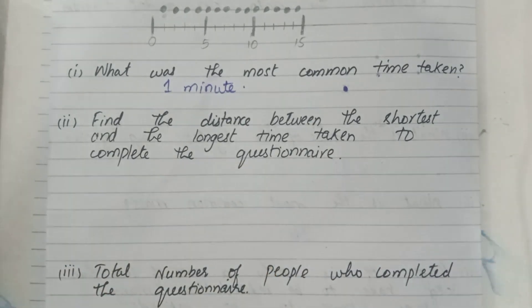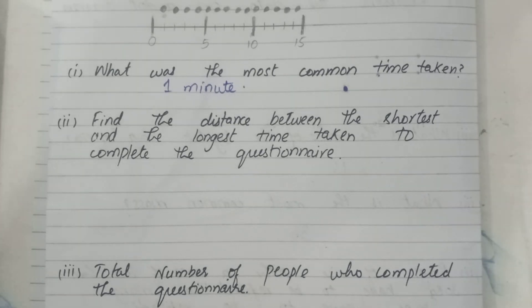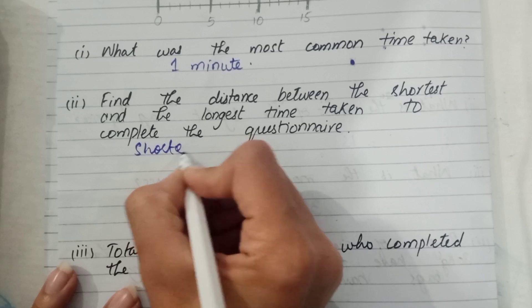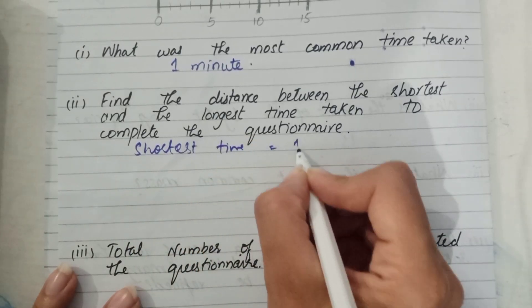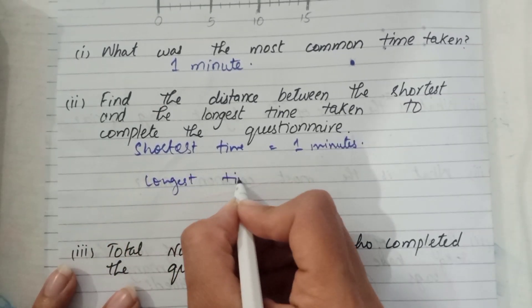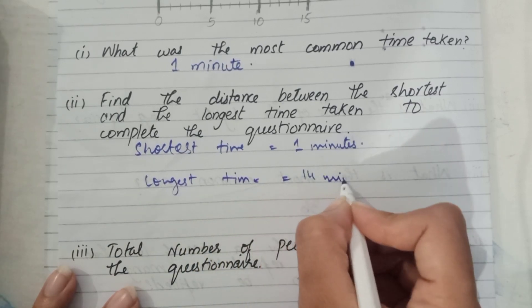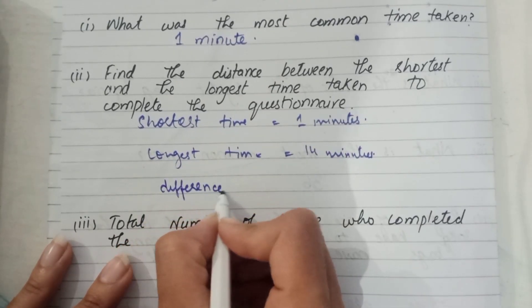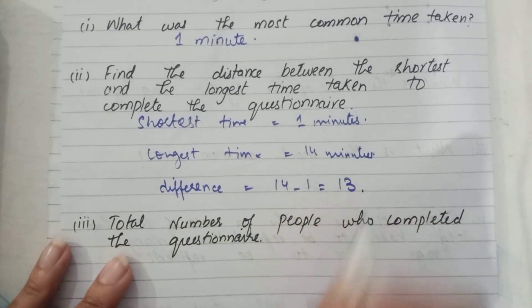Part two: find the difference between the shortest and the longest time taken to complete the questionnaire. The shortest time is 1 minute and the longest time is 14 minutes. The difference is 14 minus 1, which equals 13 minutes.